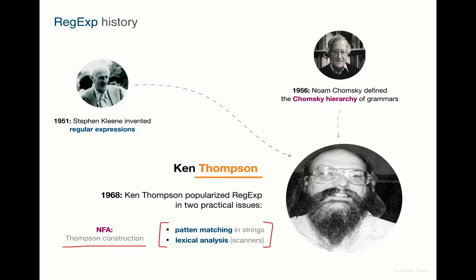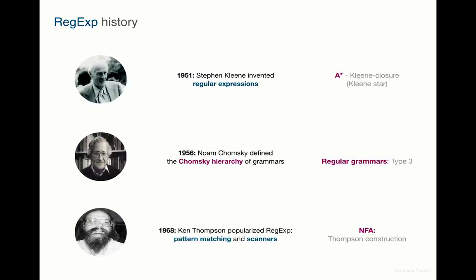In this course, implementing a regular expression machine, we're going to make the same journey as these three gentlemen. We'll start from the discussion of formal grammars, considering the theoretical aspects of Kleene and Chomsky, then gradually move to finite automata theory, building a Regexp machine based on NFAs and DFAs — that is, non-deterministic and deterministic finite automata. During the course we'll also have a practical part where you'll be asked to actually implement a regular expression machine. It's not required, although highly recommended, since only applying theoretical aspects in practice makes our understanding of the topic complete.